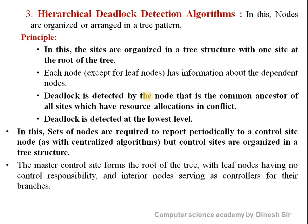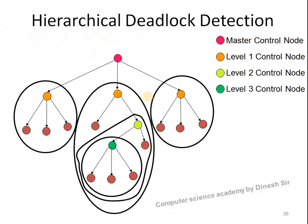The principle of the hierarchical deadlock detection algorithm is that sites are organized in a tree structure. Each node has information about its dependent nodes, and the root node has all information about the ancestor nodes. The deadlock is detected by the node that is the common ancestor of all sites with resource allocation conflicts. Deadlock is detected at the lowest level — that is, the child level — where cycles are generated and detected.